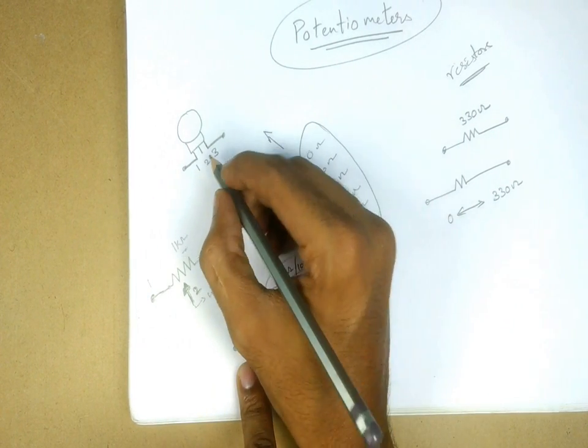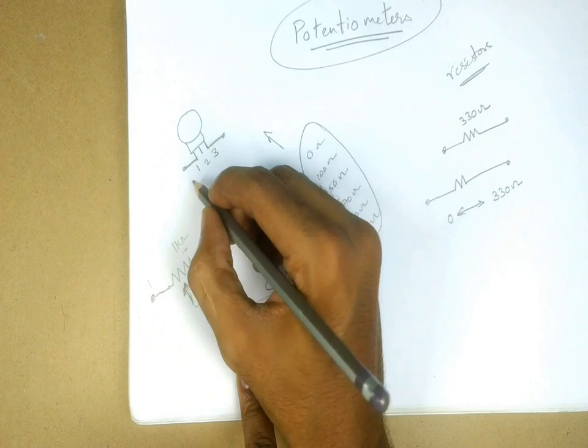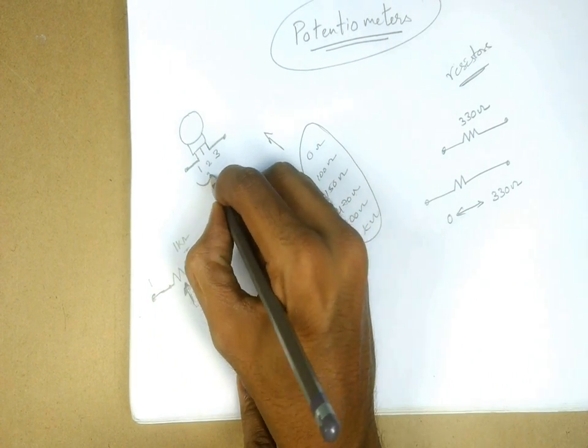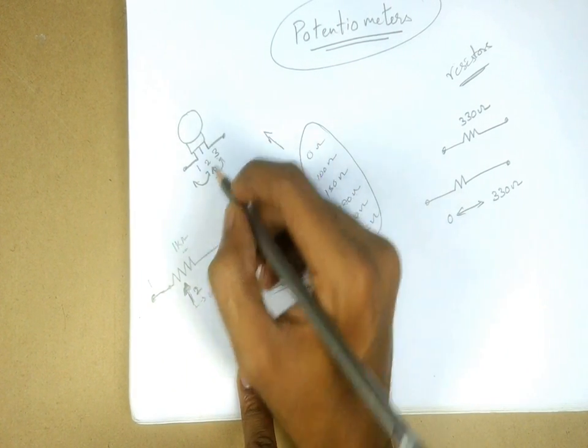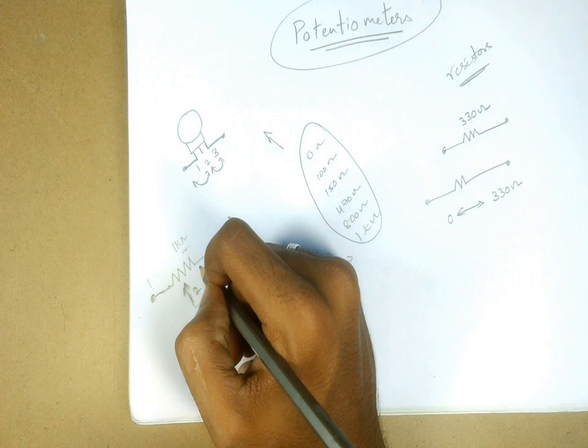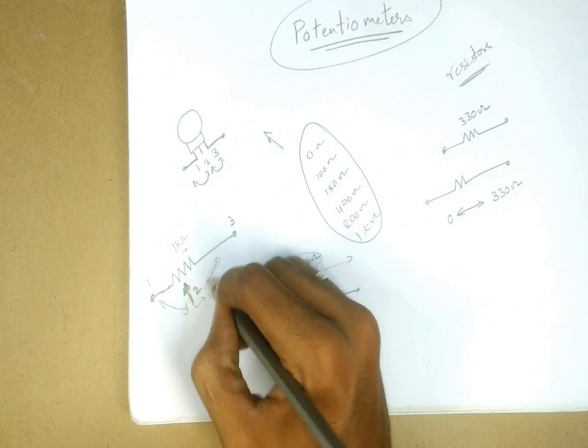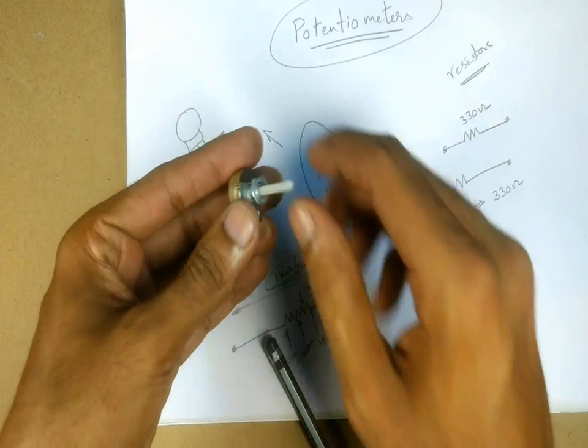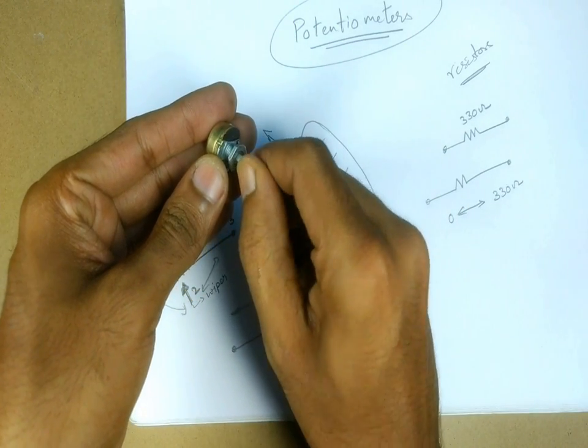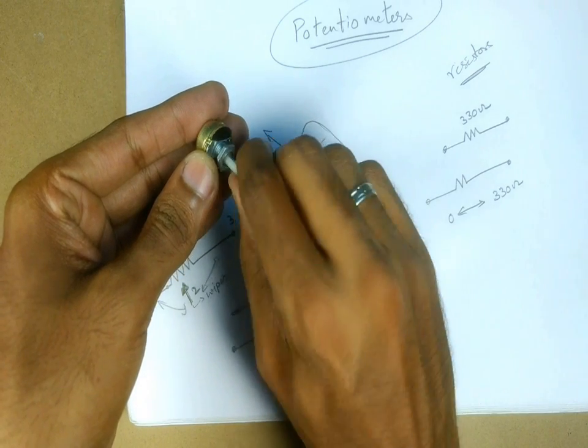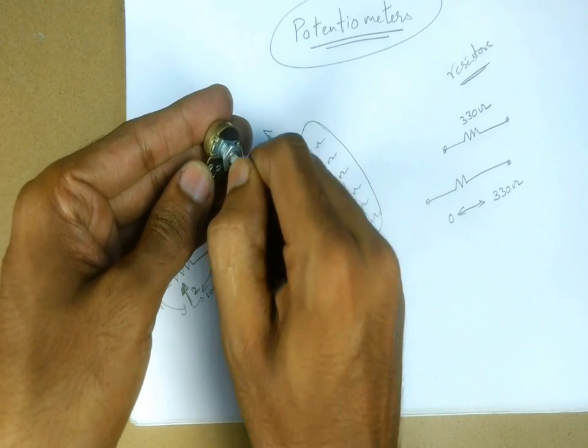But if you want a variable resistance, you can either use pins 1 and 2, or pins 2 and 3. Either of these pairs will give you a variable resistance. The only difference is that pins 1 and 2 will give you increasing resistance clockwise, while pins 2 and 3 will give you decreasing resistance with clockwise turning of the spindle.